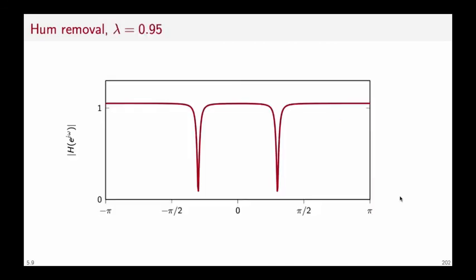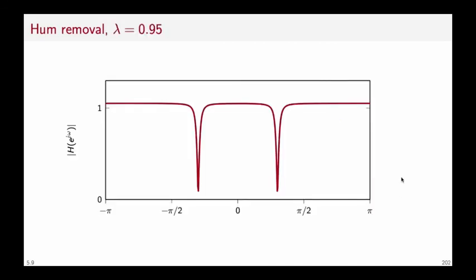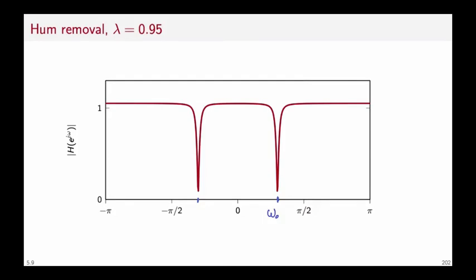When we do that we obtain a second order transfer function with a second order numerator and a second order denominator. If we plot the frequency response we get the characteristic that we're looking for and we're placing the notches now at a frequency of interest omega zero. The structure is a standard direct form 2 implementation where we have shared the delays between the feed forward and the feedback part of the filter and the coefficients can be worked out by carrying out the products between the first order terms in the transfer function.